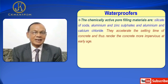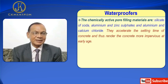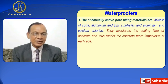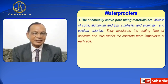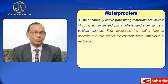The chemically active pore filling materials are silicates of soda, aluminium and zinc sulphate, and aluminium and calcium fluoride. They accelerate the setting time of concrete and thus render the concrete more impervious at an early age.